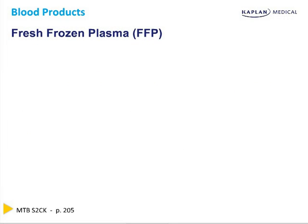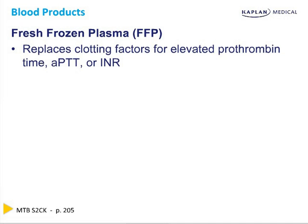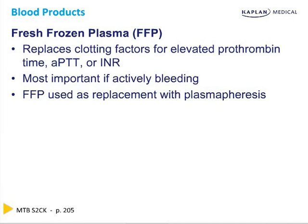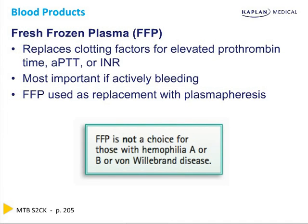Fresh frozen plasma is the 150 mLs of plasma removed to make the packed cells. It replaces clotting factors and is used when there's an elevated prothrombin time, APTT, or INR. Most importantly, it is used when you're actively bleeding. We rarely use FFP if people are not bleeding because clotting factors last only a day or two — some even hours. FFP does not give you hemophilia A or B factor — it doesn't contain factor 8 or factor 9, and it doesn't work with von Willebrand's because those factors are not put into fresh frozen plasma.